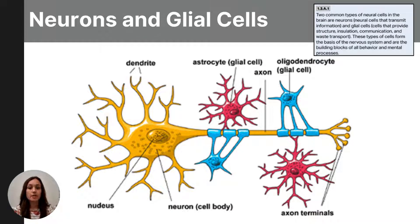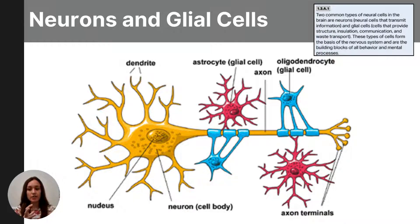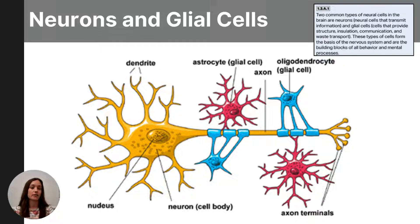Surrounding the neurons and the nervous system are glial cells. Neurons rely on glial cells for nourishment and insulation — similar to how queen bees depend on their worker bees. Glial cells provide nutrients and insulation, help guide neural connections, and clean up waste after neurons send messages to one another.